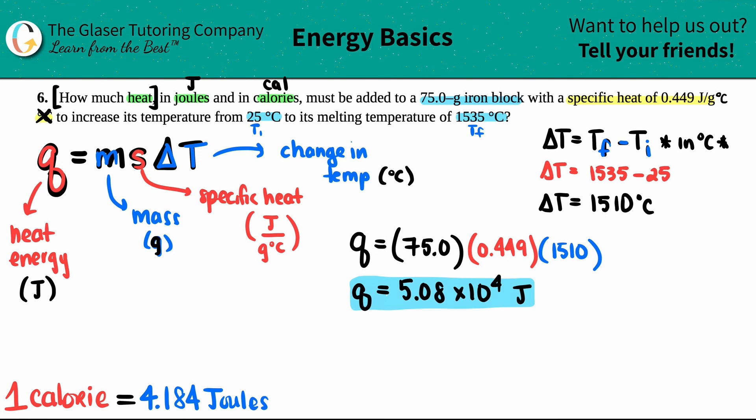When I'm using this formula Q is always in joules, so there's one answer. The heat that's required to raise the temperature of this iron block is 50,800 joules. So joules is checked. Now we have to just convert to calories. We have this little lovely conversion down here: we know that one lowercase c calorie is equal to 4.184 joules.